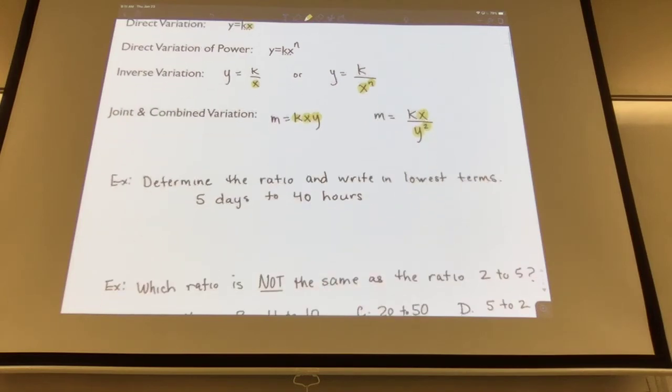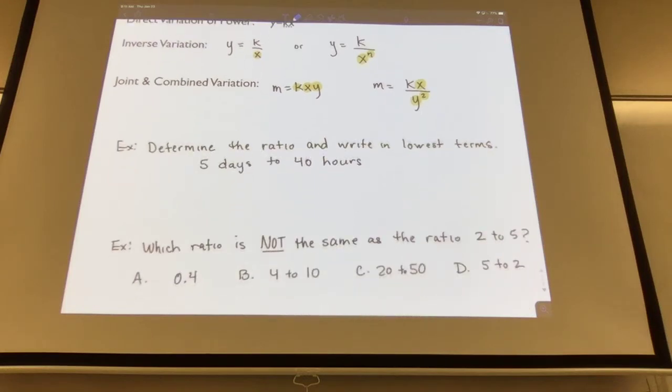But the first thing says determine a ratio. What's a ratio? It's division, right? We're going to look at ratios and proportions today and write in lowest terms. So it's going to give us a statement, five days to 40 hours, which we said we know ratio is pretty much like division. So if I write five days over 40 hours, and then what does it tell us to do? It says write in lowest terms, which means just simplify that fraction. Five and 40 both have what in common? Five.